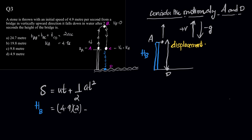So this is 2 plus half into, what is A? A is minus g, which is minus 9.8. What is T? T is 2 squared. So this would be equal to 4.9 into 2 plus minus 4.9, because 9.8 by 2 is minus 4.9 into 4.